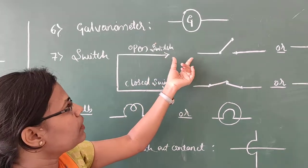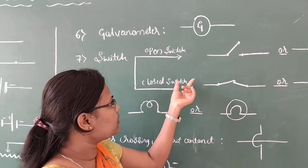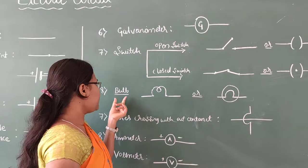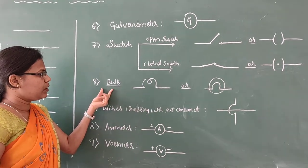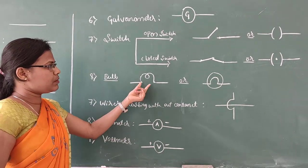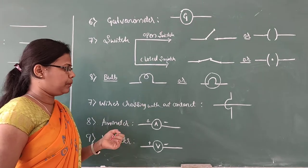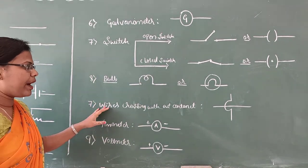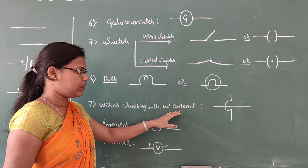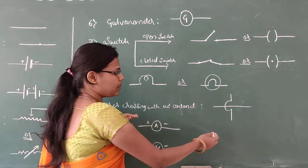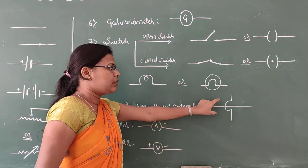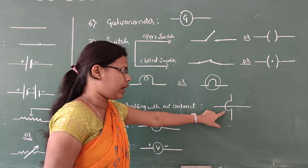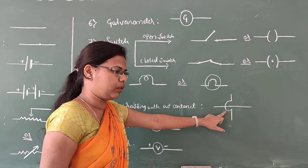These are the two symbols for switches — the first is the open switch and the second is the closed switch. This is the symbol for an electric bulb. Next is wires crossing without contact — this symbol is used when two wires cross each other without making any contact.